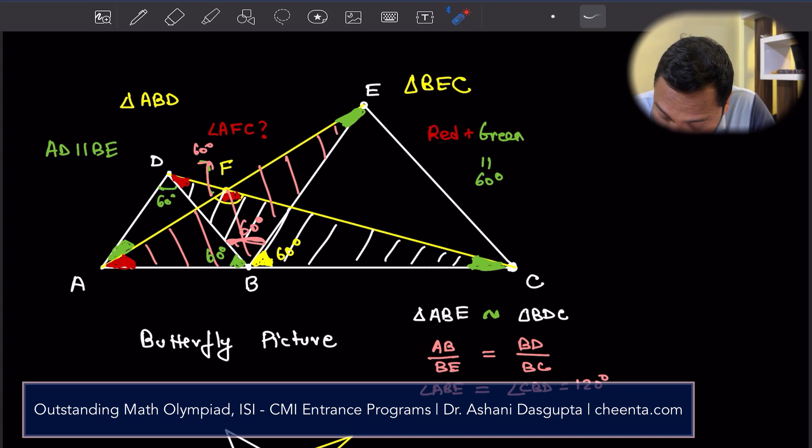Now if this is 60 degrees, angle DFA is 60 degrees. So clearly angle AFC must be 120 degrees. That's our answer. Angle AFC is 120 degrees.